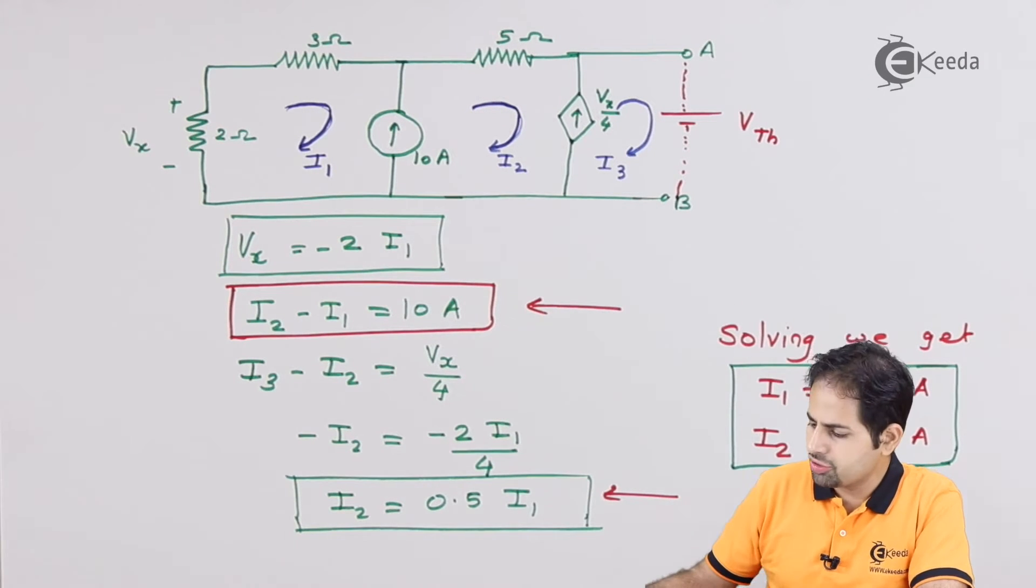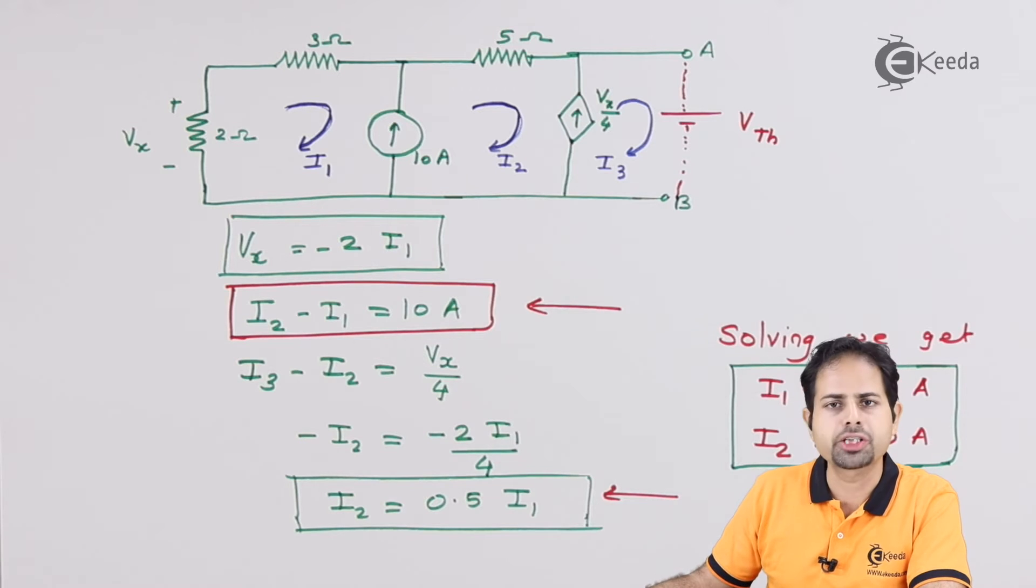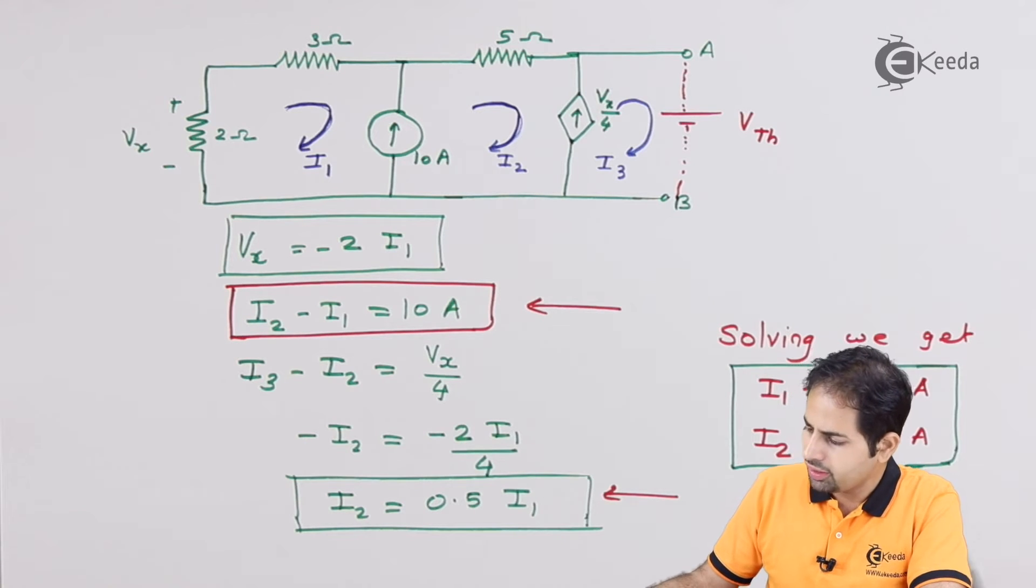So after solving these equations, we got I1 and I2 as minus 20 and minus 10 respectively, with ampere sign or ampere unit.